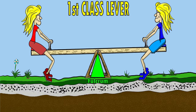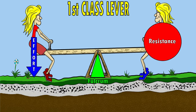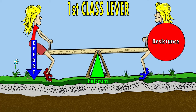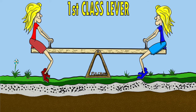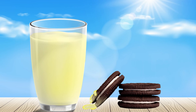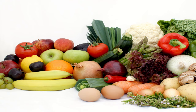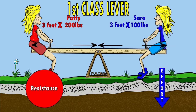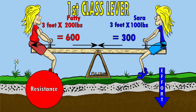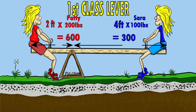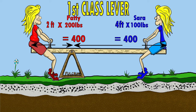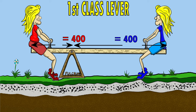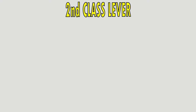On the seesaw, the fulcrum is in the middle with each person acting as the resistance or effort force. For example, if Patty is 200 pounds and Sarah is 100 pounds, Sarah would have to increase her mechanical advantage to greater than one — at least twice the distance from the fulcrum — while Patty would decrease her mechanical advantage to less than one, since she has twice as much force.